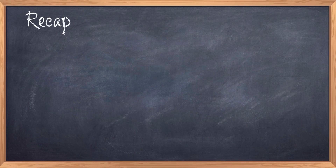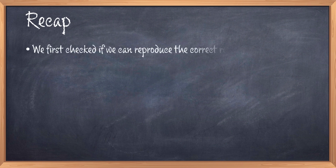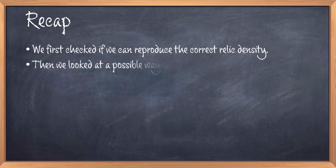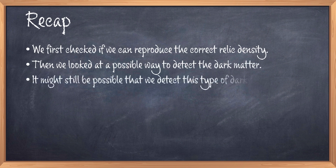This video looked at some phenomenology that one can investigate for dark matter models. First we checked that we can reproduce the correct amount of dark matter, thus the correct relic density. Having made sure that the model can do that, we moved on to the possibility of detecting the dark matter via direct detection experiments. Here we find that it might be possible, but we should find it soon, because otherwise the neutrino floor will become an issue.